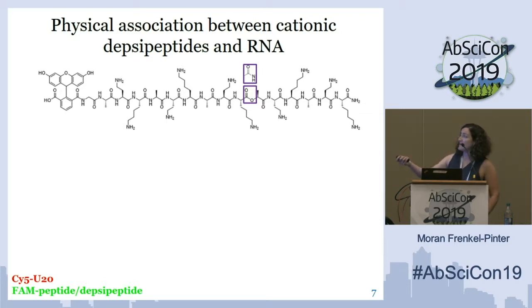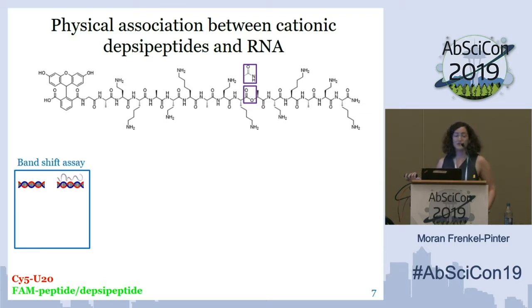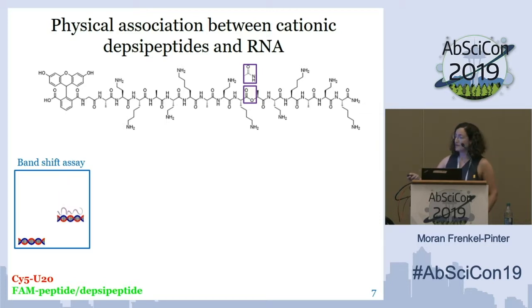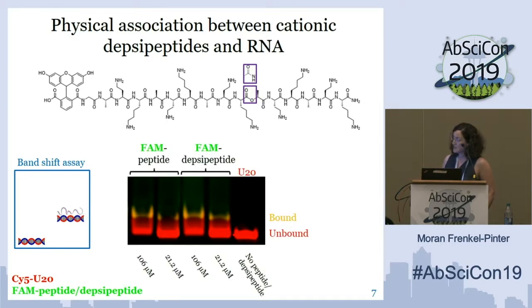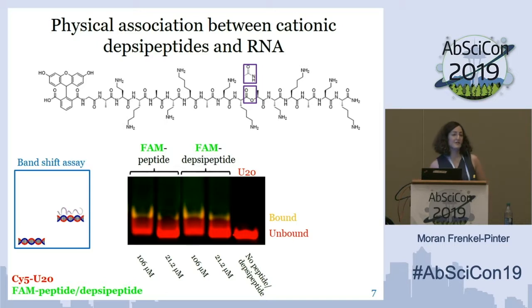To that end, Dr. Lehman synthesized a cationic depsipeptide, and we had in our system both labeled RNA — a U20 — and a fluorescently labeled peptide or depsipeptide. The first thing we wanted to do was ask: can we see physical association between the two types of polymers? We used the commonly used band shift assay. Under native gel conditions, when we run RNA it migrates to a certain extent, but upon interaction with a peptide it migrates more slowly. Indeed, we see physical association between cationic peptides and depsipeptides. The unbound RNA is labeled in red, and we can see a smear and even a distinct band in orange implying co-localization of both the RNA and the peptide or depsipeptide.